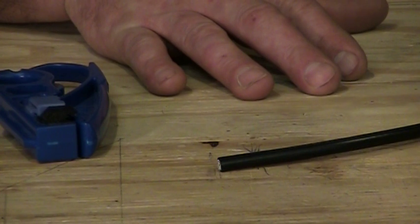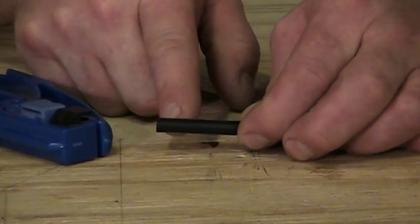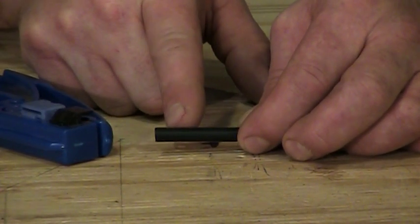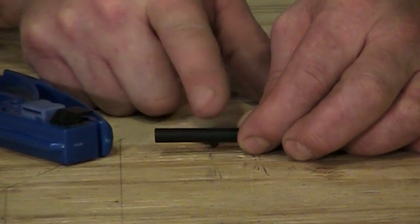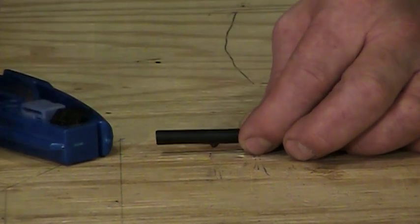which is referred to as a two-step strip. This is where we've got to expose a certain amount of the center conductor on the cable and a certain amount of the braiding, and the industry standard has always been pretty much a quarter inch and a quarter inch on both of these, on all these connections.